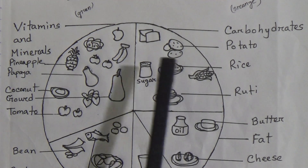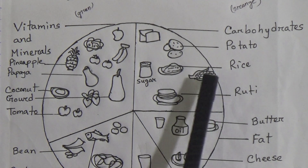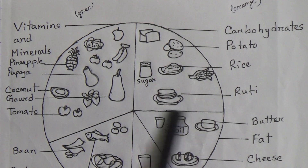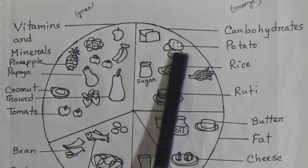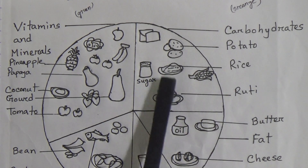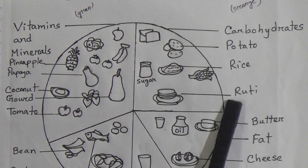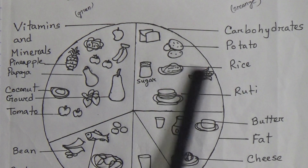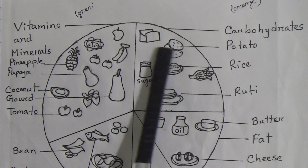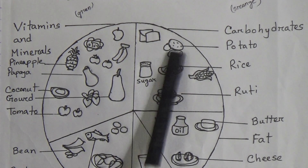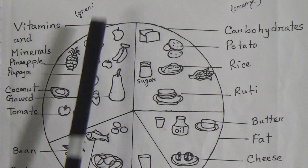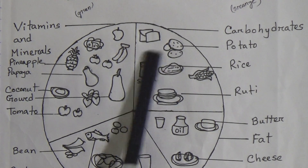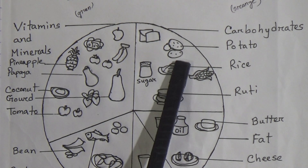Now come to carbohydrates. This portion is carbohydrates. The figures shown here are potato, rice, fruit, and sugar. For coloring: this background portion will be orange color, this portion will be green color, and this portion will be orange color.